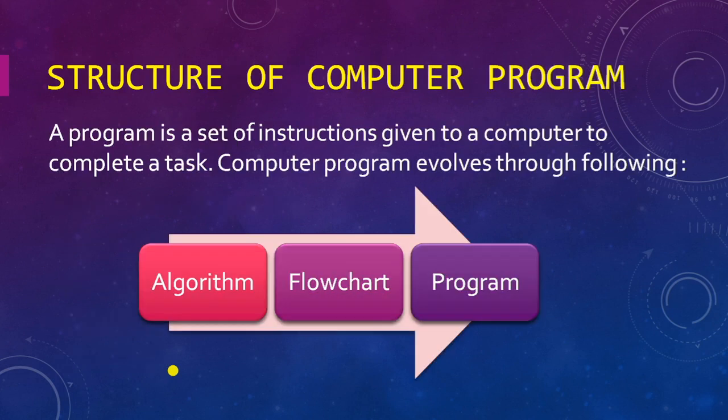Before we start, in the previous chapter we learned that a computer program is a set of instructions given to a computer to complete a task. But the program is the final stage. First we need to make an algorithm, from the algorithm we create a flowchart, and then the program.